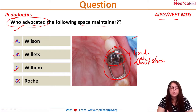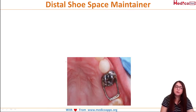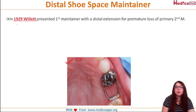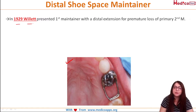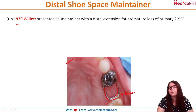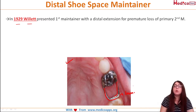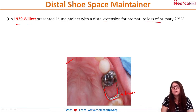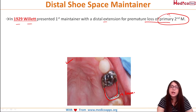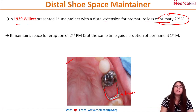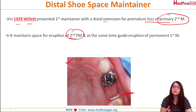Let's quickly brush up on points related to the distal shoe space maintainer. In the year 1929, Willett represented the first maintainer with a distal extension — approximately 1 mm deep on the mesial side of the tooth at the gingival margin. He advocated its use with a distal extension for the premature loss of the primary second molar, to maintain the space for eruption of the second premolar and guide the eruption of the first permanent molar.